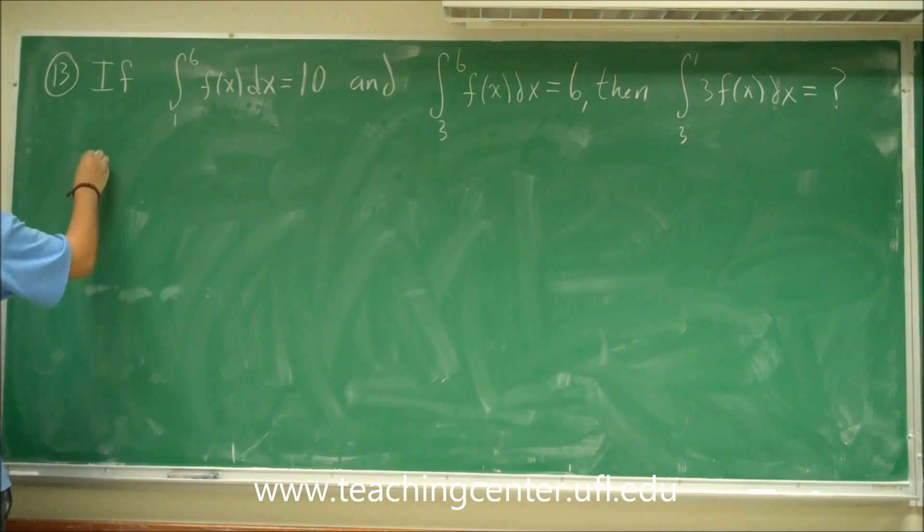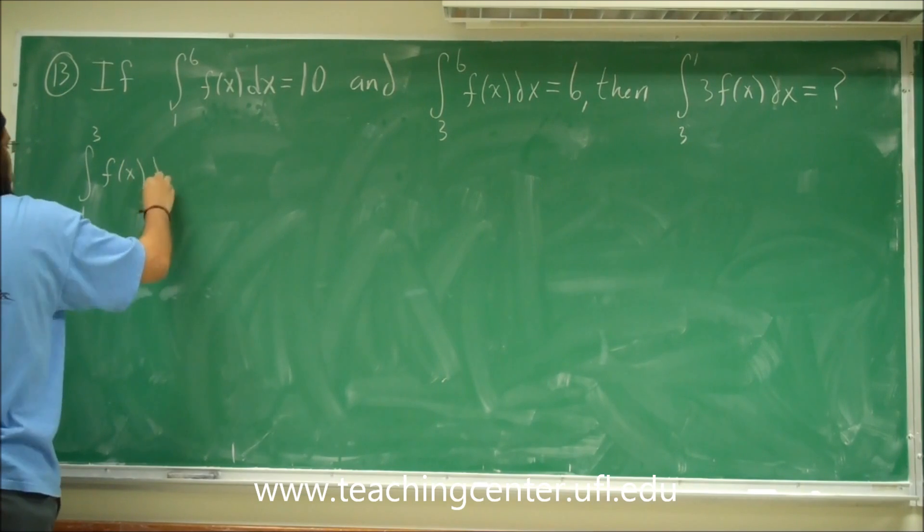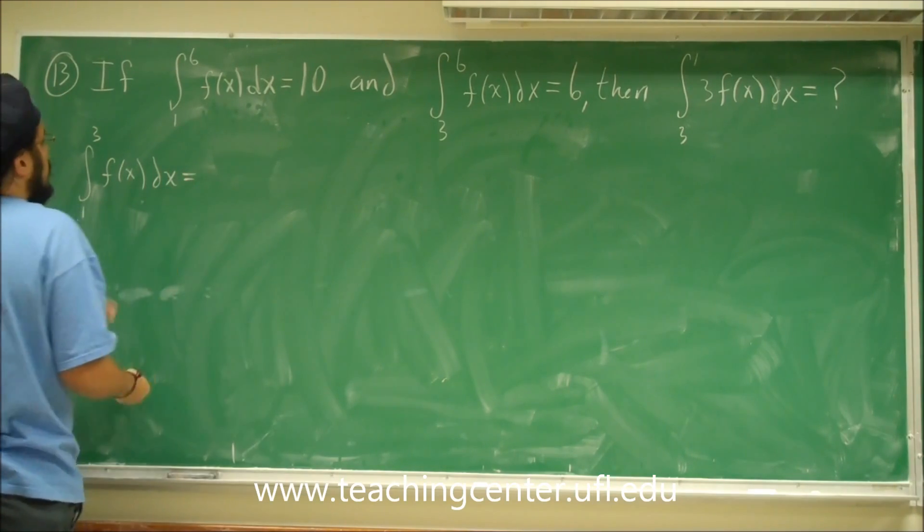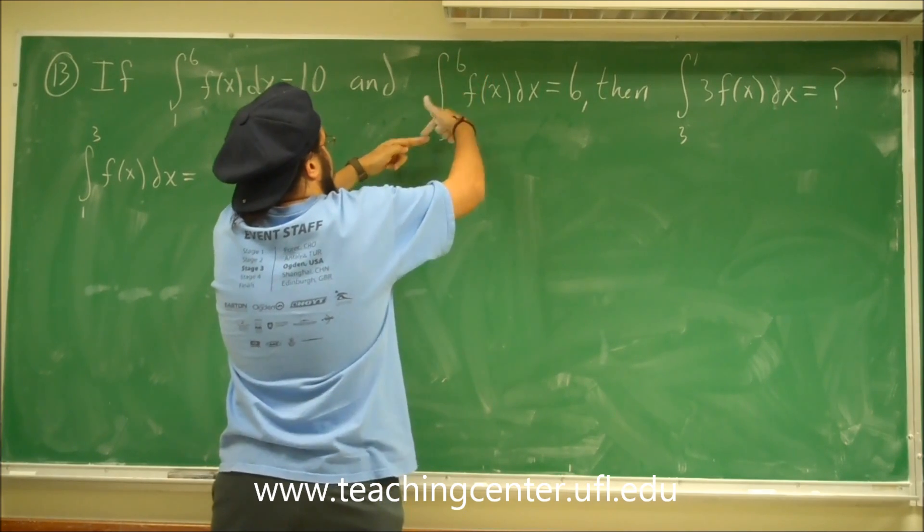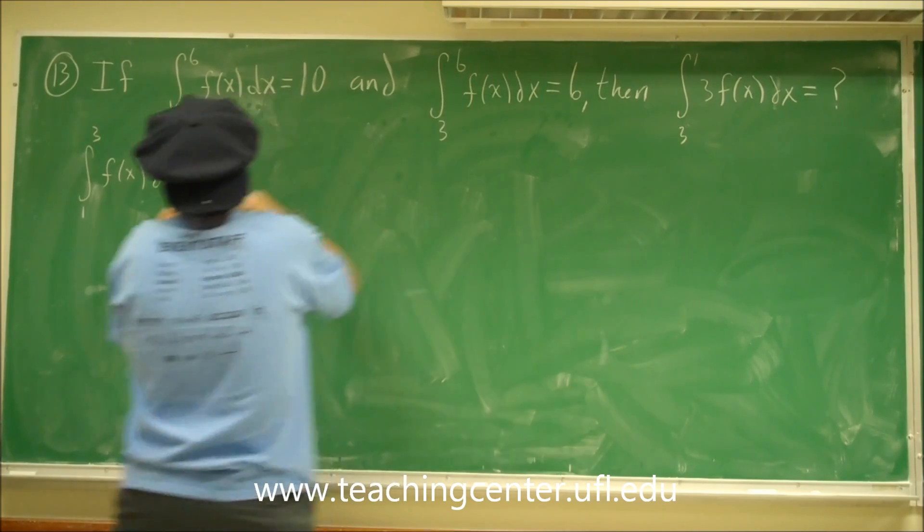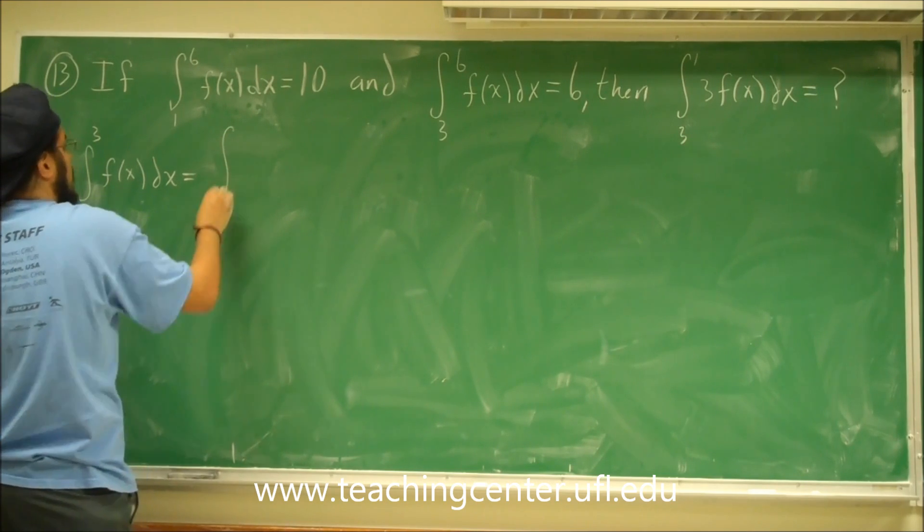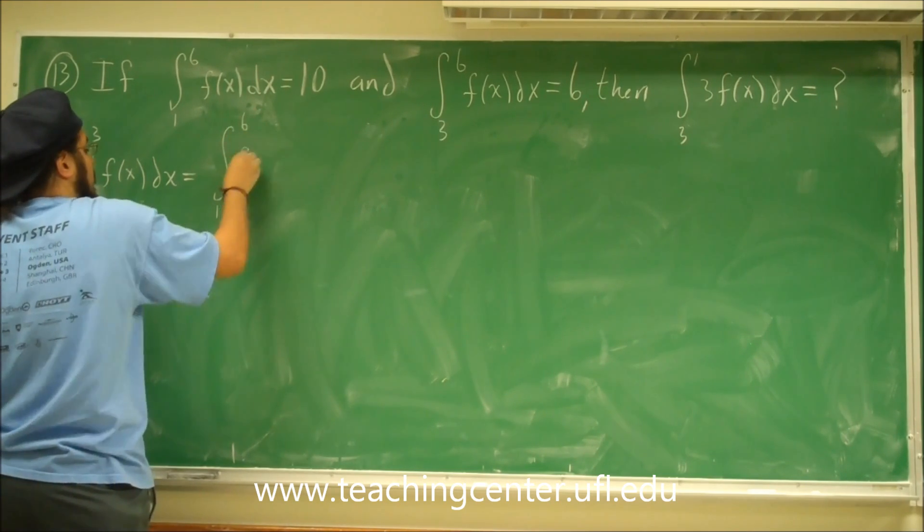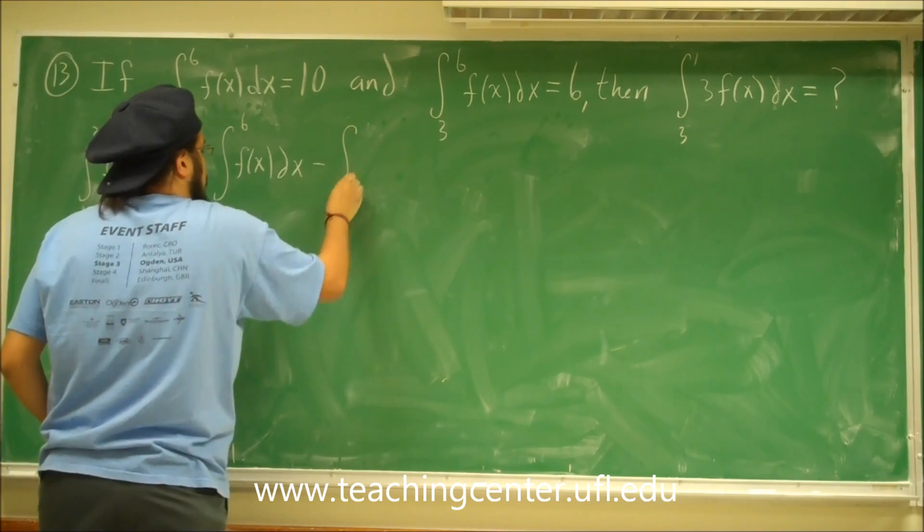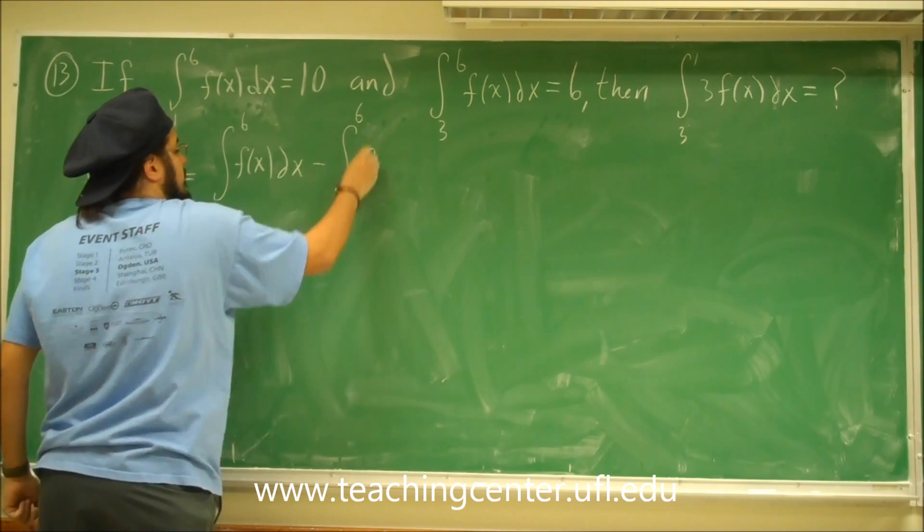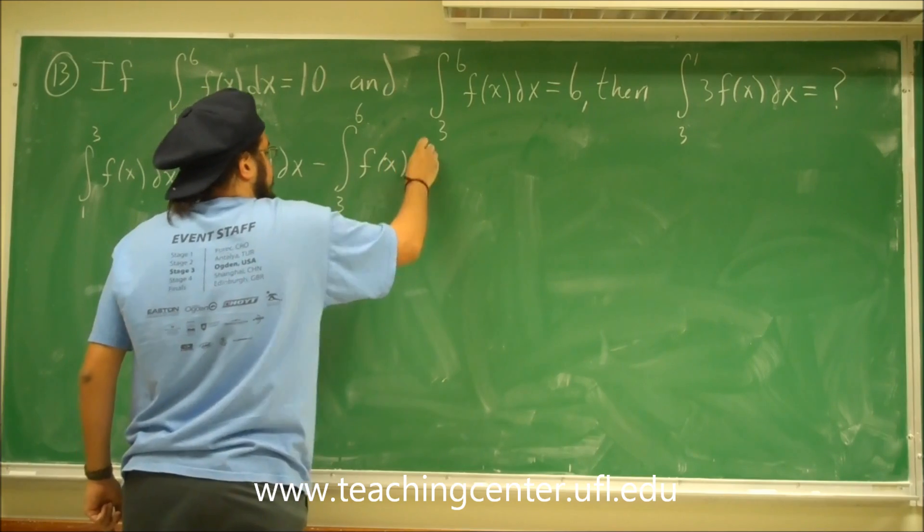So then if we know that, we also know that the area from 1 to 3 of f of x dx is then equal to this whole area minus the 3 to 6. Since if we subtract that, we're left with 1 to 3, so then that's going to be 1 to 6 f of x dx minus from 3 to 6 f of x dx.